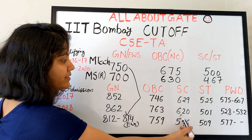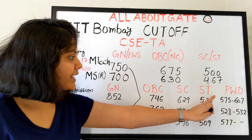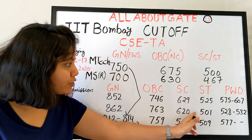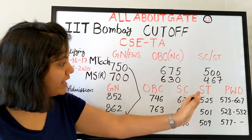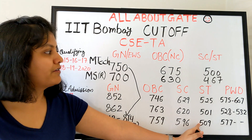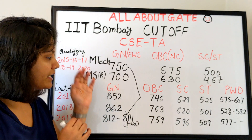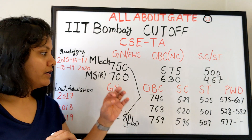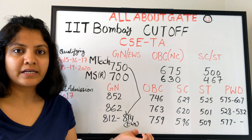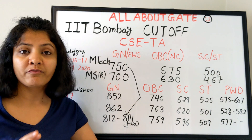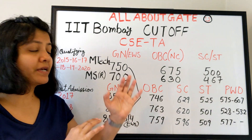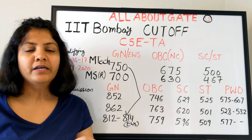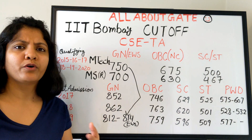For the SC category, the last admitted GATE scores were 629, 620, and 596. For ST category, it was 525, 501, and 509 — all in the range of 500. These cutoffs I am mentioning are just for having an idea; it is not strict that this will be exactly the same this year. You need not be confused or make big analyses out of it — it's small information to give you a general sense and clear up certain questions.